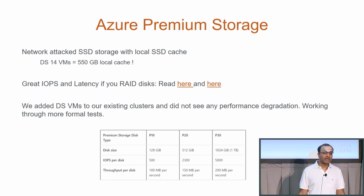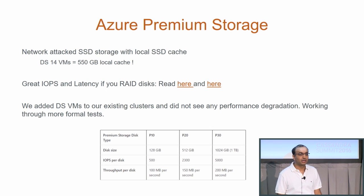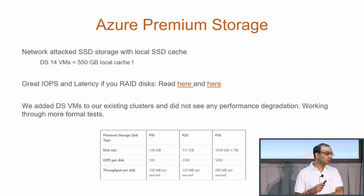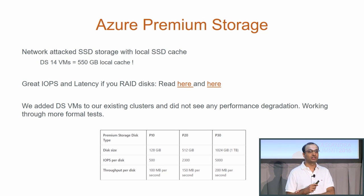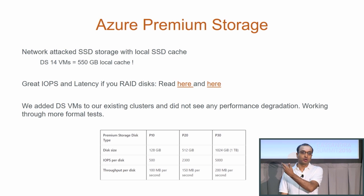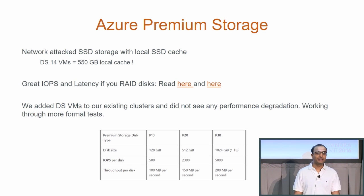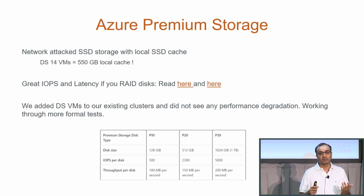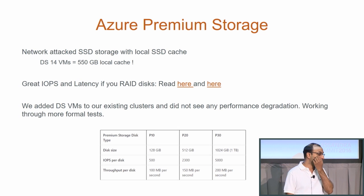Looking forward, we are looking at Azure Premium Storage to solve our SSD issues. This is network-attached SSD storage that also gives you a local SSD cache — on the beefiest SKU, that local SSD cache is around 550 gigs. It has great IOPS and latency, with formal performance numbers linked on the slide. We have added these VMs to our existing clusters and haven't seen any performance degradation, but we are still working through specific experiments. Maybe next year we'll have all clusters migrated and can give you better numbers.